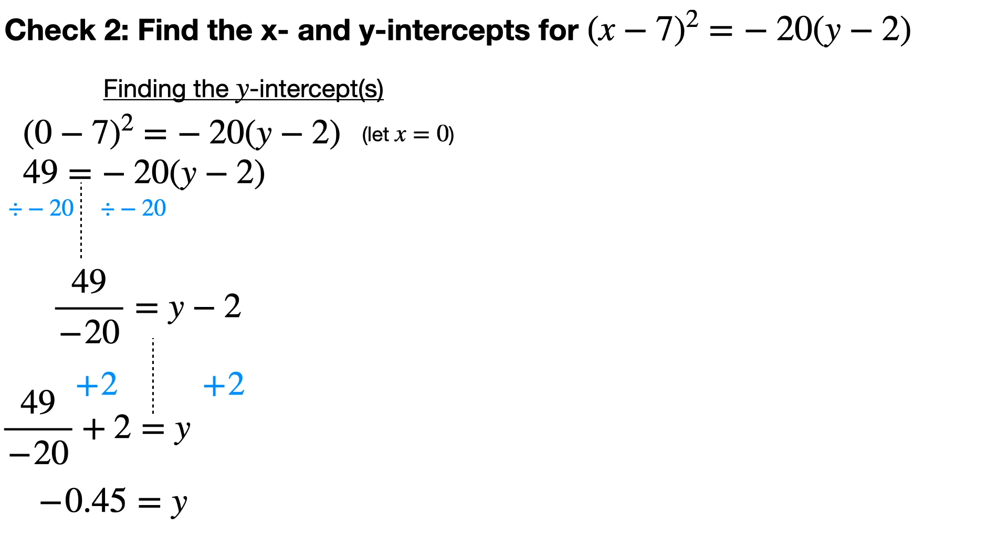That's the y value when x is 0. So the point (0, -0.45) is the y-intercept. And that's the only one, because algebraically, when we solved it, we only got one answer.